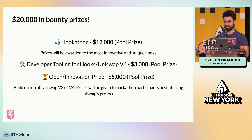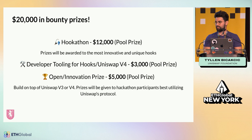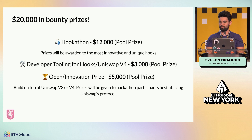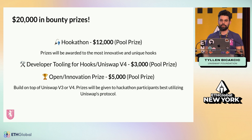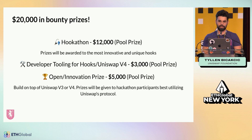That's Uniswap v4 and what we're doing with hooks. We have $20,000 in bounties that we're giving out for people looking to build on top of hooks — we call it our hook-a-thon. We're giving $12,000 as a pool prize to people building innovative, unique hooks that we haven't really seen before, and we haven't seen a lot because this has only been out for two months. So I think the world is y'all's oyster in how you build these hooks. We're also looking for help with developer tooling — anything that helps make the developer experience better — and we're giving out $3,000 in pool prizes for that, with two to three prizes per pool.